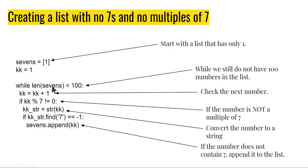So while the length of '7s' is less than 100 — remember, the while loop keeps running while this condition is true, and the moment it becomes false I get out. I go to the next number. The logic is simple: I do not want multiples of 7, so I check if kk modulo 7 is not equal to 0. Modulo gives you the remainder, so kk modulo 7 not equal to 0 means it's not a multiple of 7.